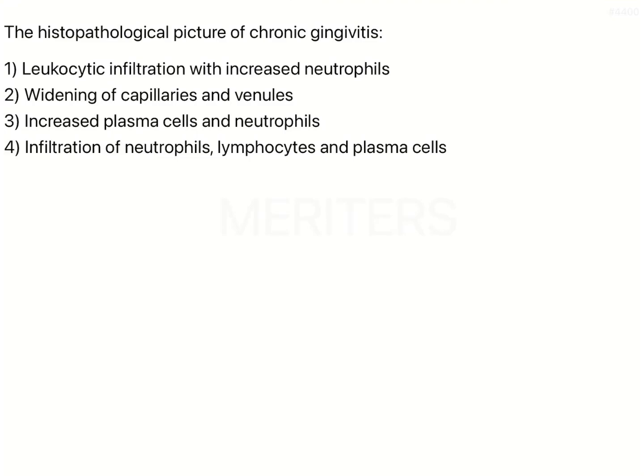The question is: the histopathological picture of chronic gingivitis is? Usually the most common presentation when a patient comes to you with bleeding gums is basically a stage of chronic inflammation. The most common complaint or presentation of a patient with bleeding gums is always going to be chronic inflammation, because the gingiva is always in a state of inflammation.